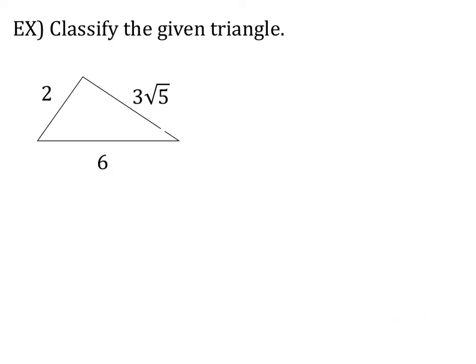Now, pause the video and try this one on your own. So the first thing we need to do is decide which side is our C, which one is our longest side. So since I couldn't compare 3 root 5 to 6, I converted it to a decimal and got 6.7. So that means that 3 root 5 is my longest side.